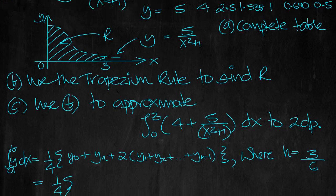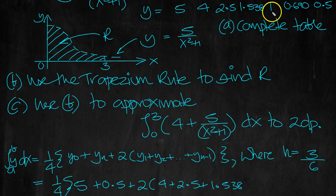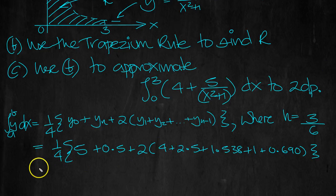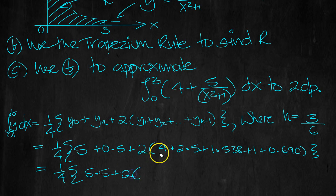So that equals 1 quarter. Now the first plus the last. So it's 5 plus the last 0.5, plus 2 times all the numbers in between. So 4 plus 2.5 plus 1.538, just running along the row here, plus 1 plus 0.690. Close that bracket, close the brace. So we've got 1 quarter, 5.5 plus 2 times 7.5 plus 1.538 plus 0.690, just to make it a little bit easier to tap in the calculator.